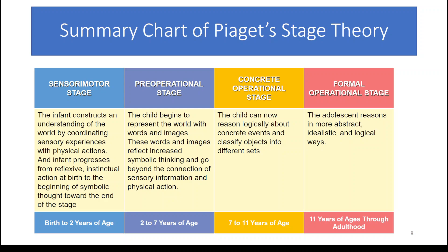Then we hit the pre-operational stage. You're starting to think of the world in terms of words and images. Kids have already learned some words and are probably talking, but this is the part where they really start to think of the world in terms of words and images, not just feelings and movements. They start thinking symbolically. Language becomes super important to them in the pre-operational stage.